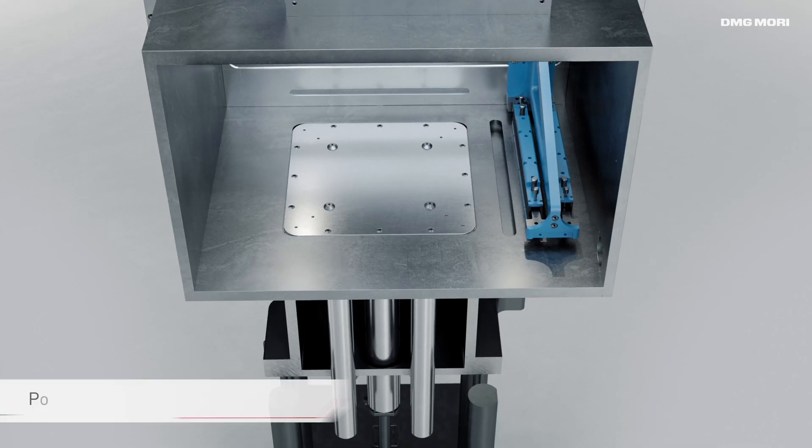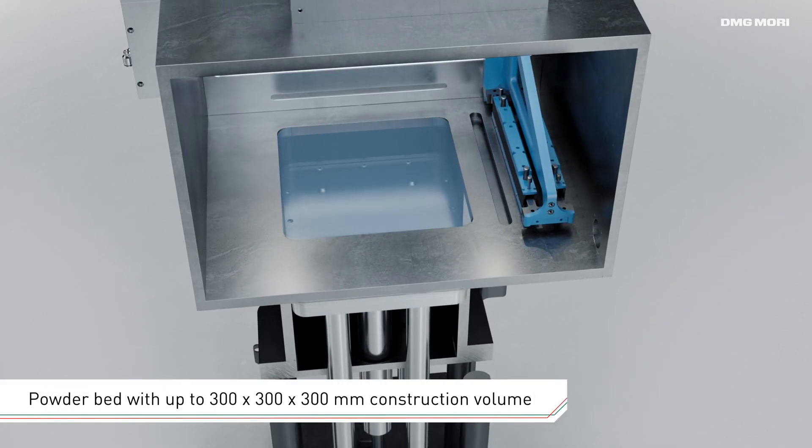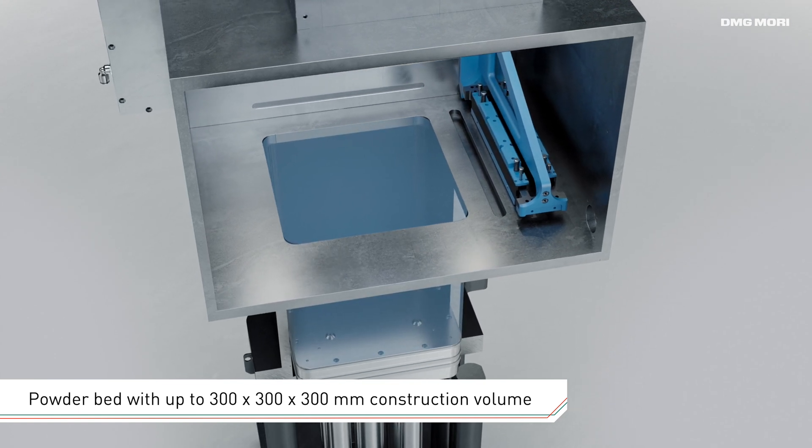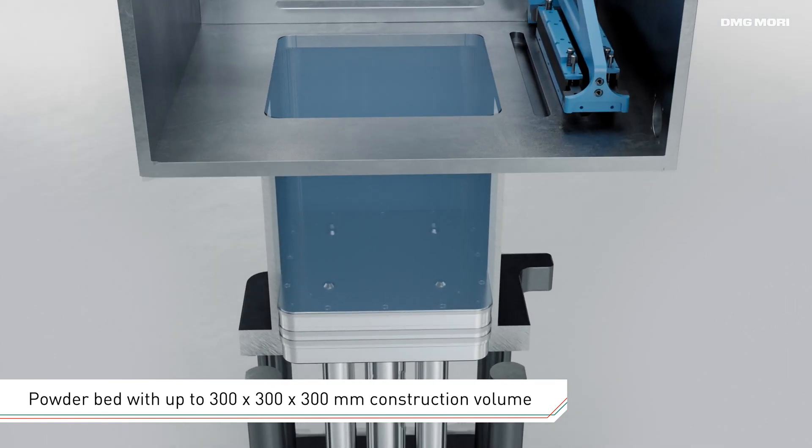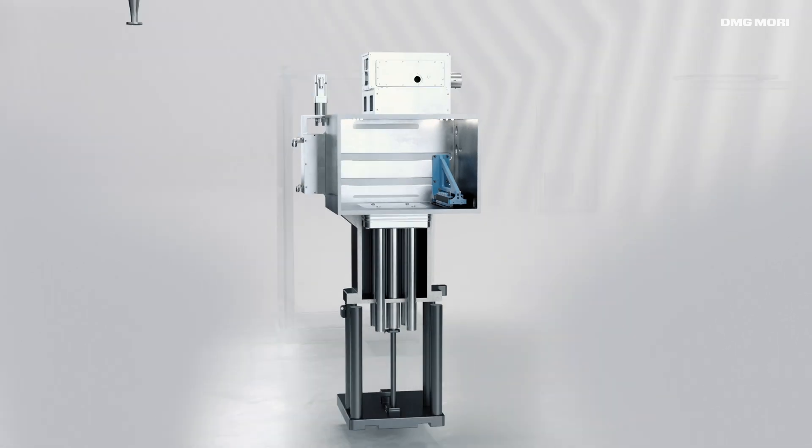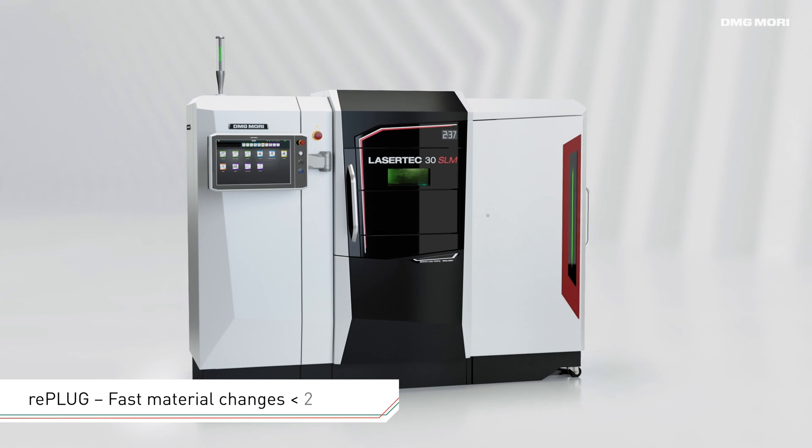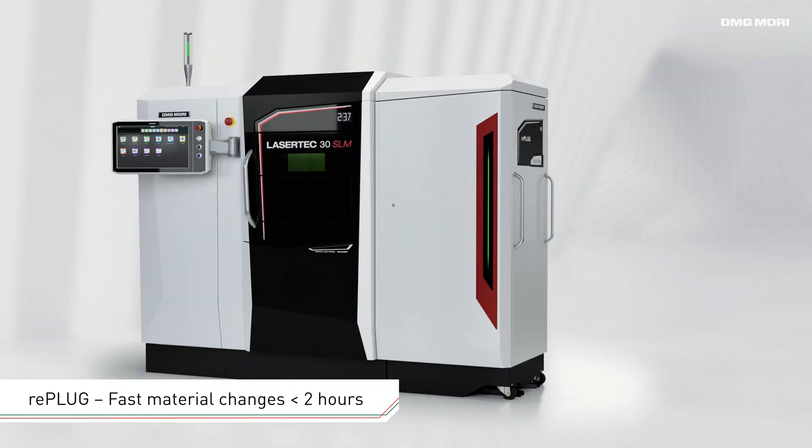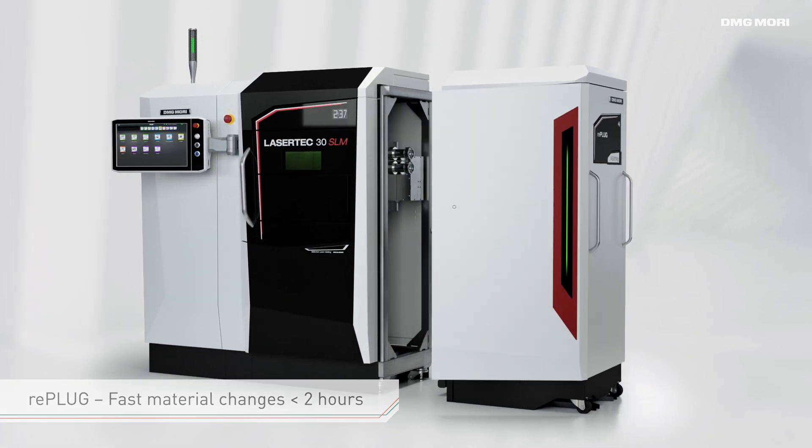With a construction volume of up to 300 x 300 x 300 mm, it supports the precision building of workpieces featuring layer thicknesses of between 20 and 100 micrometers, and the RePlug Powder module enables contamination-free material changes in under 2 hours.